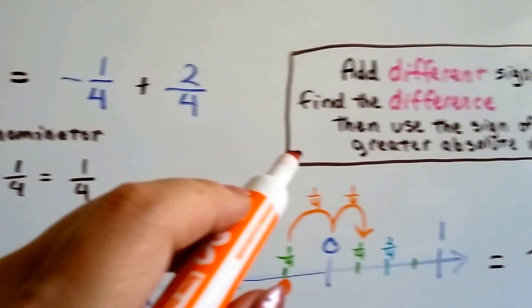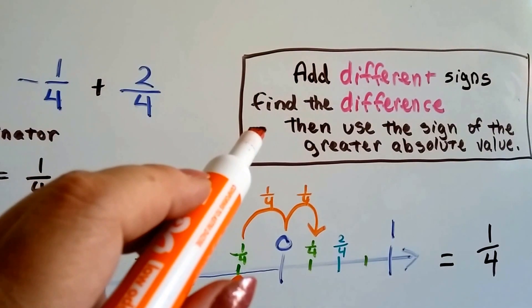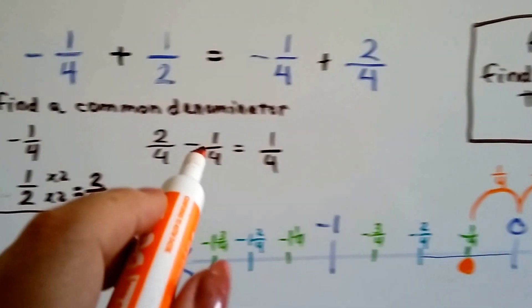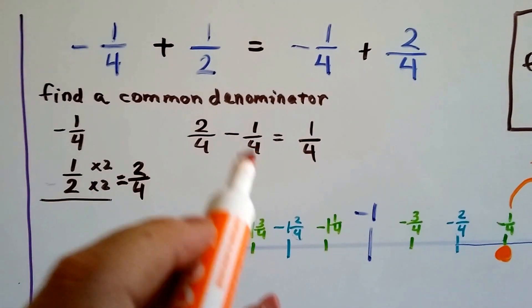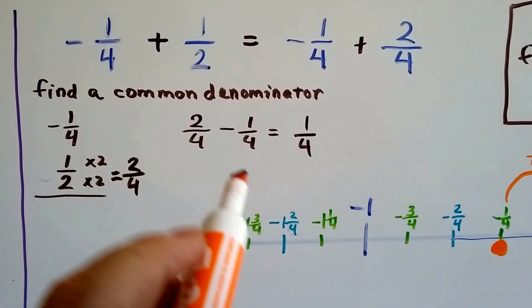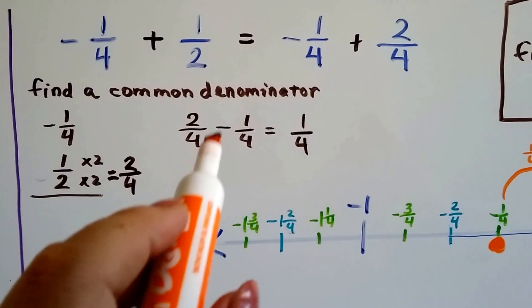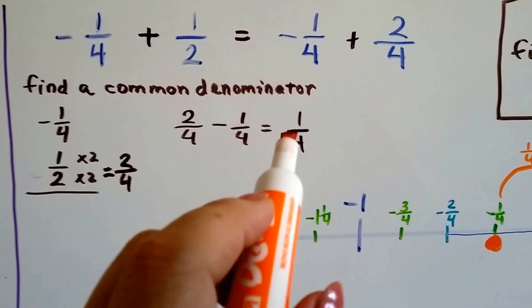And the signs are different. So, what do we do? We find the difference because the signs are different. So, now we've got to take the smaller one away from the bigger one. So, now we've got 2 fourths minus 1 fourth. Well, it equals 1 fourth.